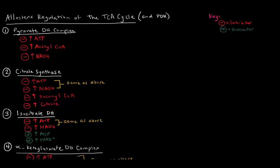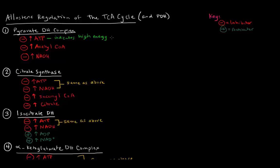The pyruvate dehydrogenase complex has three different allosteric inhibitors, the first one being lots of ATP. So if there's lots of ATP around, that's going to inhibit the pyruvate dehydrogenase complex. Lots of ATP indicates a high energy state. The TCA cycle and the pyruvate dehydrogenase complex make acetyl-CoA, which goes through the TCA cycle to make NADHs and FADH2s that will later give us a lot of ATP through the electron transport chain. So if we already have lots of energy, we don't need to be creating more. It makes sense that ATP inhibits the pyruvate dehydrogenase complex and therefore the TCA cycle.